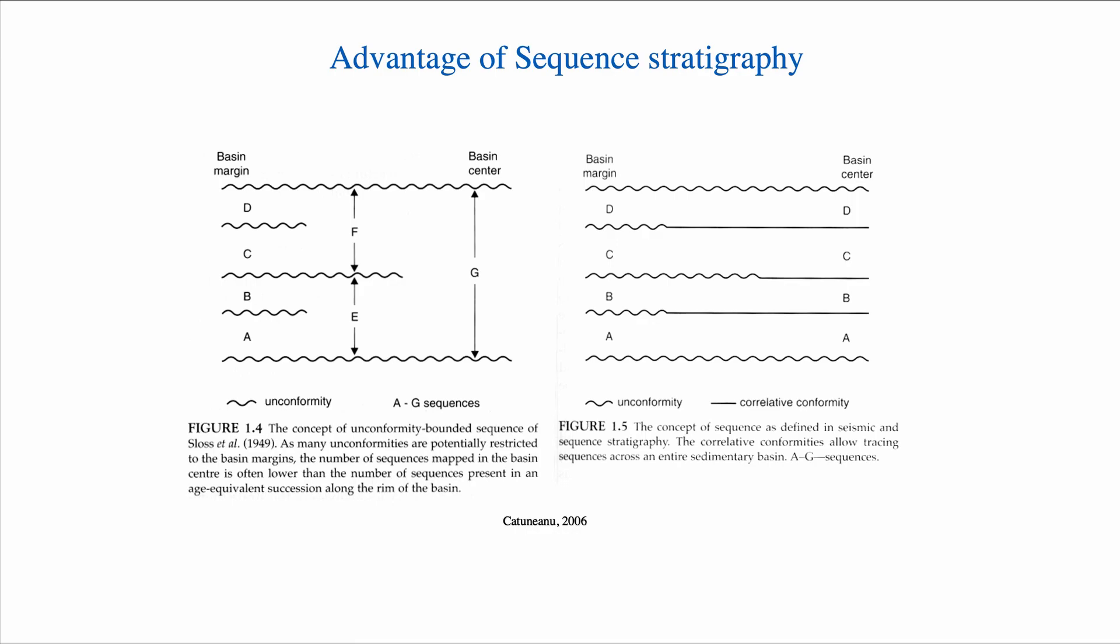So allostratigraphy relies on using unconformity to subdivide units. So if we look at the basin margin, where we have a lot of erosion, because often in shallow water you can expose the sediments, we end up in this case with four allostratigraphic units.